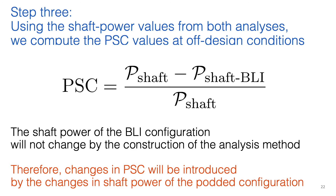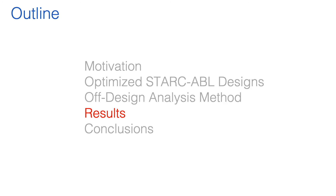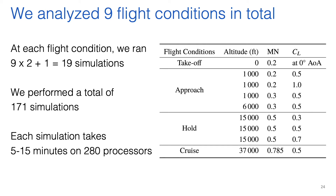Because we analyze the BLI configuration at the shaft power at cruise conditions, the differences in PSC values between on- and off-design conditions are caused by changes to the shaft power requirement of the podded configuration. In this study, we analyzed nine flight conditions in total, and each flight condition requires the analysis of nine optimized BLI and podded configurations. Because the airframe of the podded configuration is the same across nine podded designs, we only need to simulate this model once, resulting in 19 aeropropulsive simulations per flight condition. We selected these flight conditions to represent important portions of the mission profile and to study the sensitivity of PSC to altitude, Mach number, and lift coefficient.